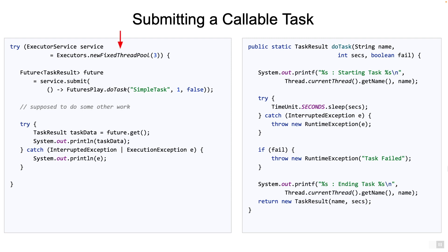On the left, we create a new fixed thread pool ExecutorService and we wrap it in a try-with-resources block. Then we submit a Callable to the ExecutorService which will return a future with the generic type TaskResult - that's the result returned by the doTask method. The execution policy here is that no more than three tasks can be executed by the service. So if you submit more than three tasks, the remaining tasks will be queued up till a thread is free. We then go ahead and call the get method on the future object, which will return the TaskResult if successful, and then we simply print the result.